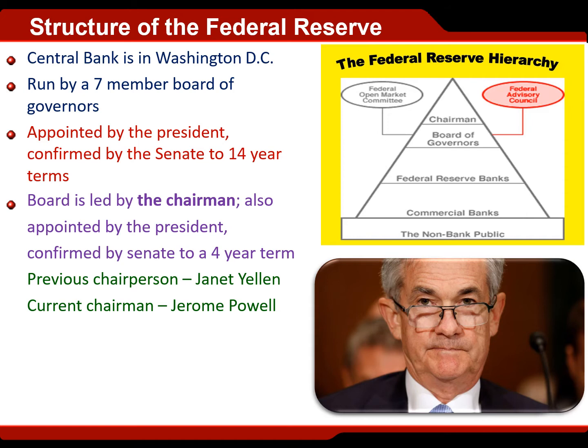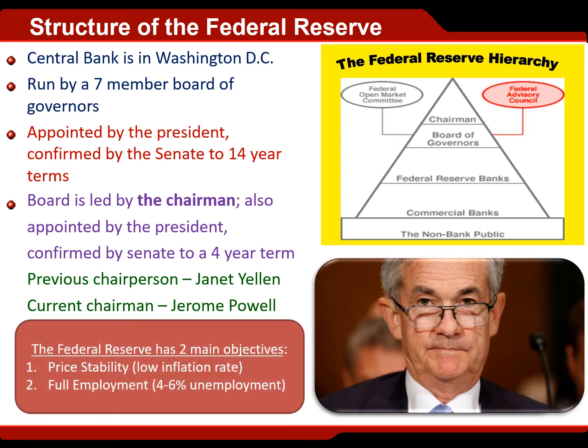The most important thing to know about the Fed is what is their goal — what is their mission? Congress has given the Fed a dual mandate. The dual mandate is to maintain price stability and full employment in the US economy. Price stability just means low inflation. Full employment means the natural rate of unemployment — four to six percent is what we're going for.